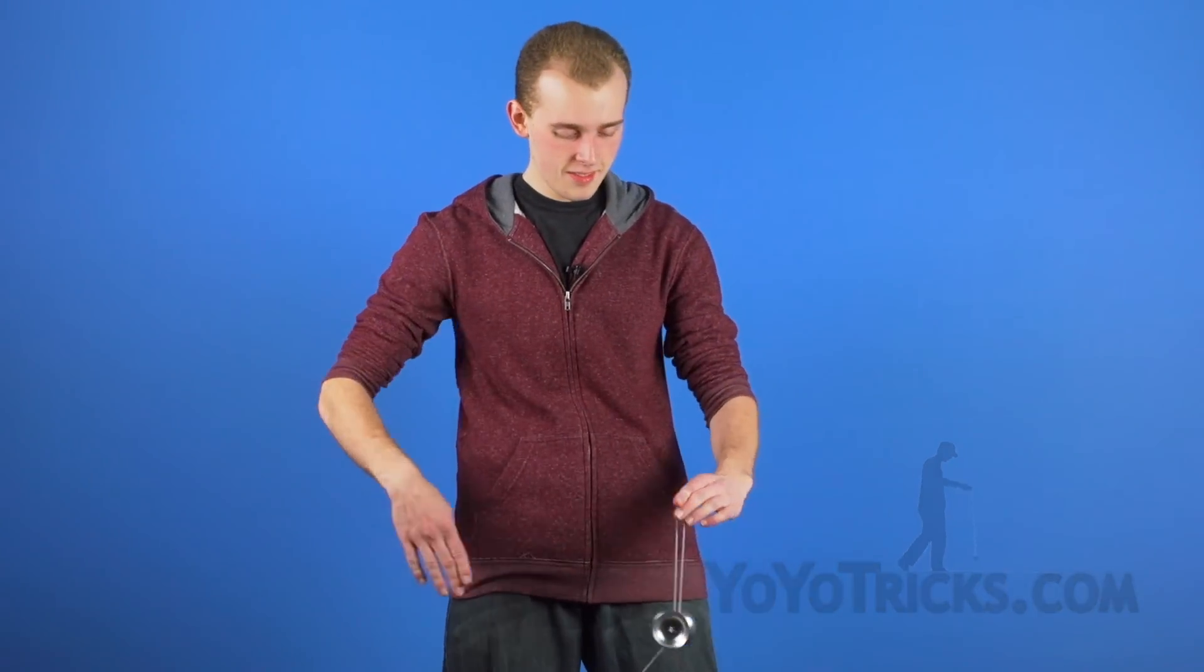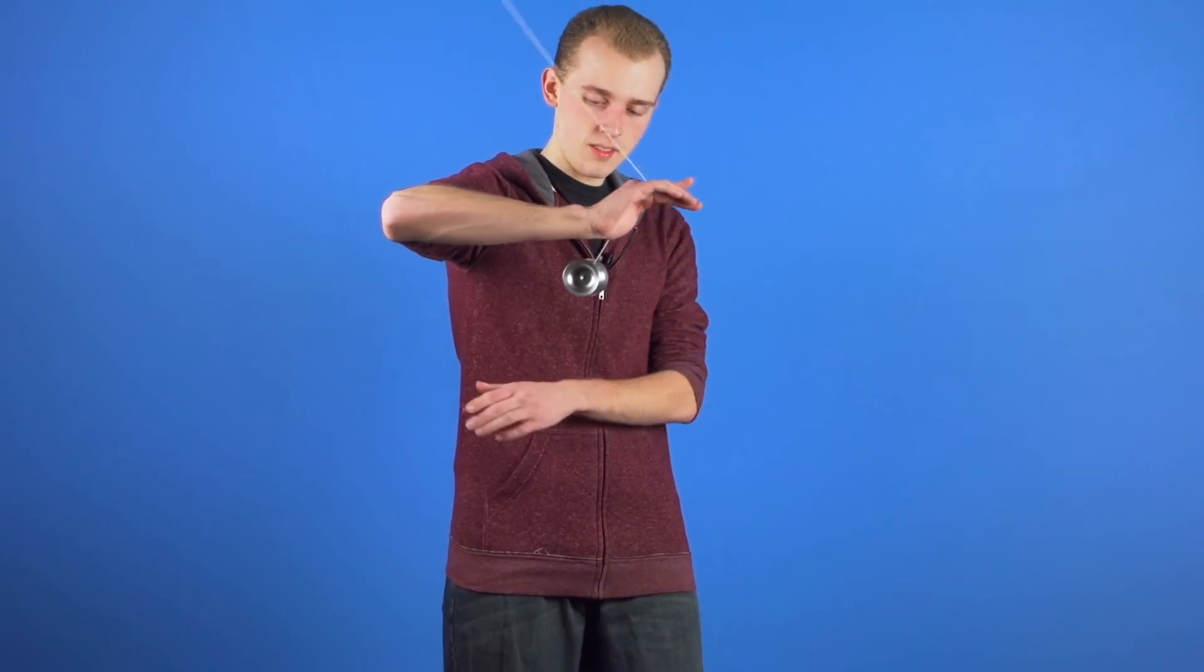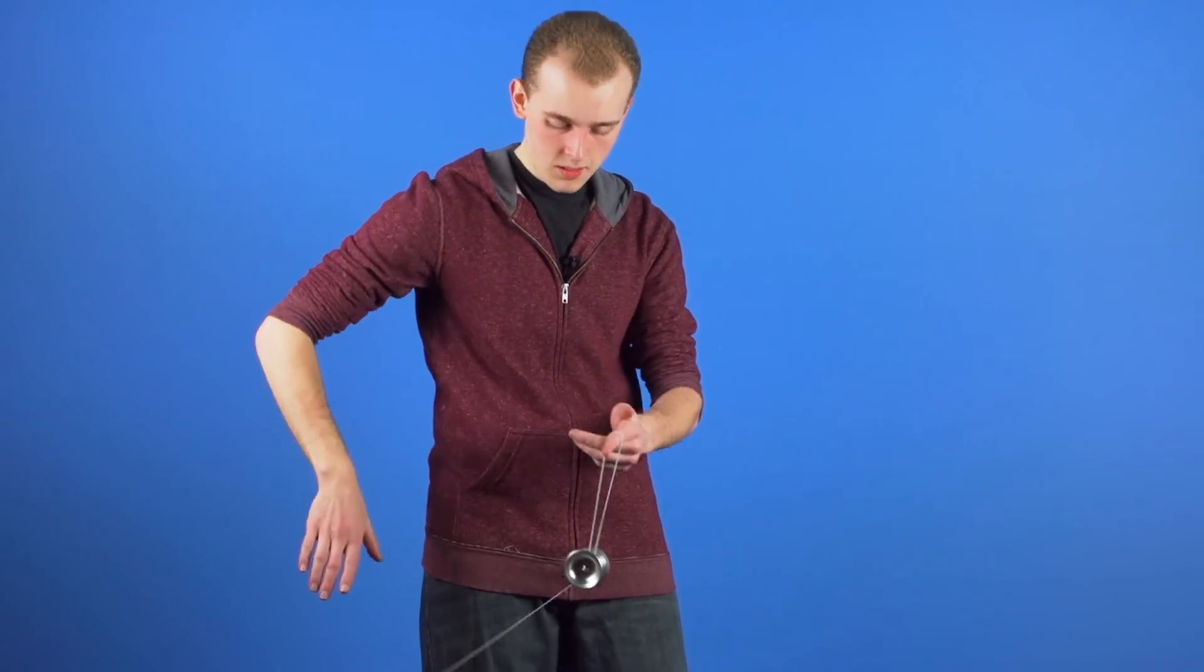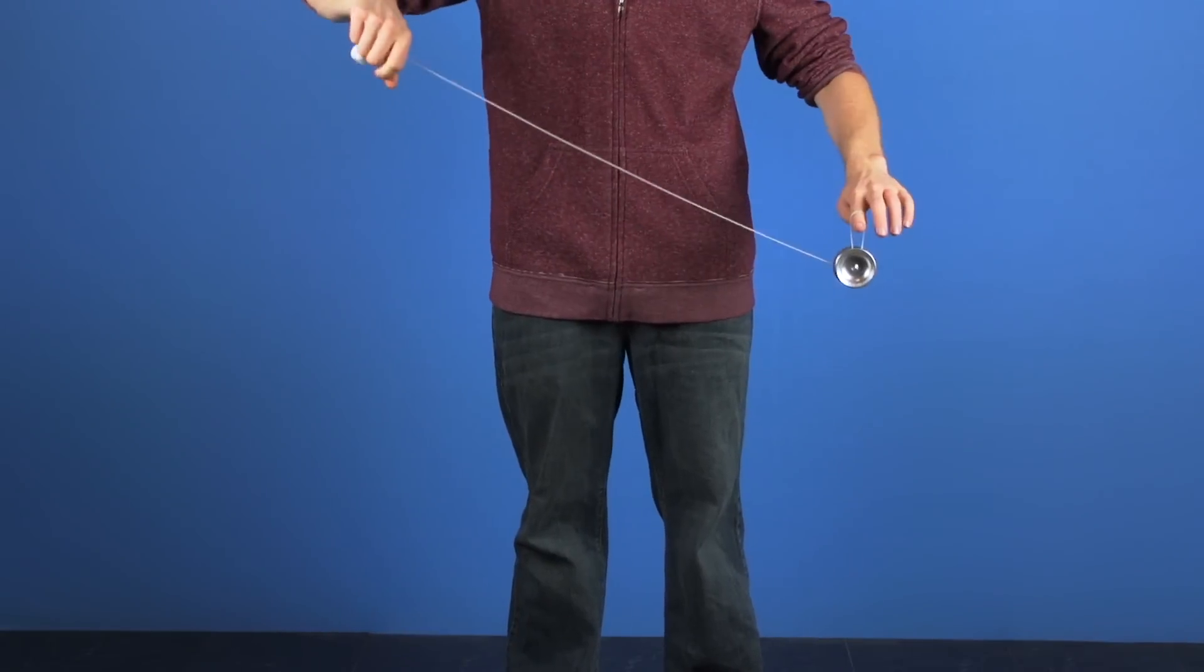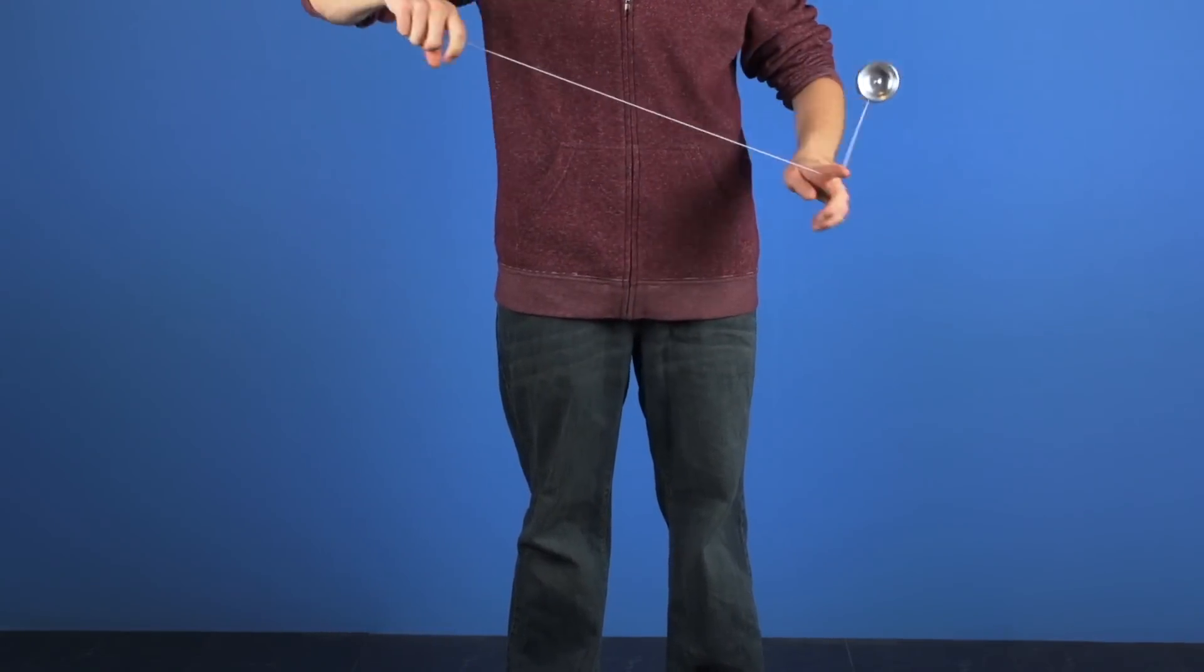This trick is called Molten Core. To do this trick, you need to know how to do Drop Trapeze. So if you haven't learned that one yet, you're definitely going to want to go back and check out our tutorial on our website.